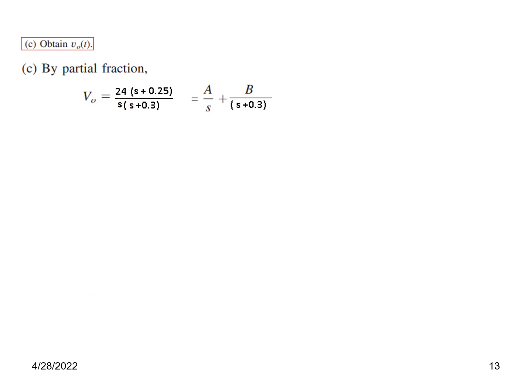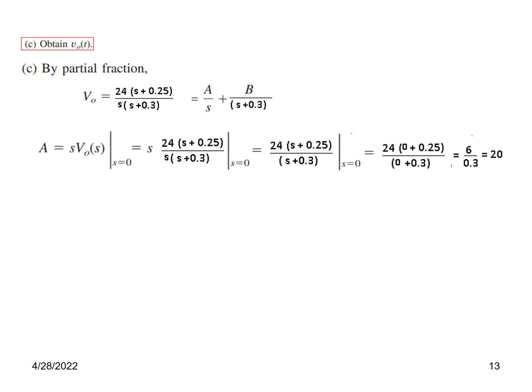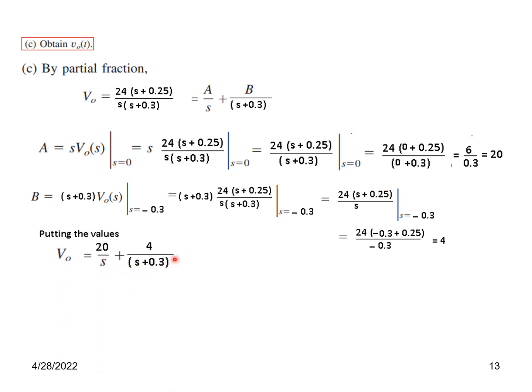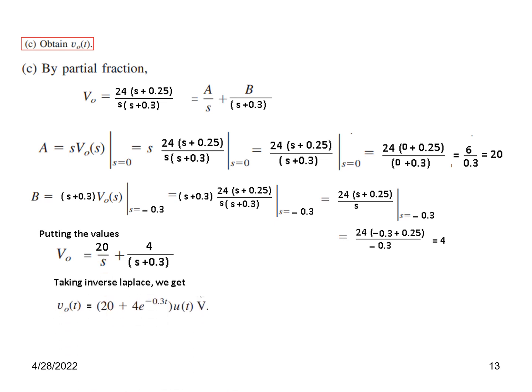For the third part, we find v0(t) in the time domain. Using partial fractions on V0(S), we find A equals 20 and B equals 4. So in the S-domain, V0(S) is expressed accordingly. Taking the inverse Laplace transform gives v0(t) equals (20 plus 4e^{-0.3t})u(t). This completes the practice problem solution.